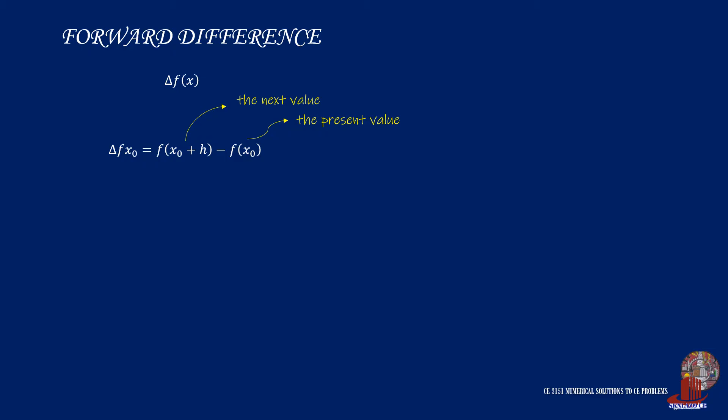Taking delta F of X1 is then the value next to it, which is F of X1 plus H less its value taken as F of X1. Delta F of X2 will be taken similarly, which will then be F of X2 plus H less F of X2. If we translate these functions into Y, we get delta Y0 is equal to Y1 minus Y0, delta Y1 is solved as Y2 minus Y1, and delta Y2 is then Y3 less Y2.